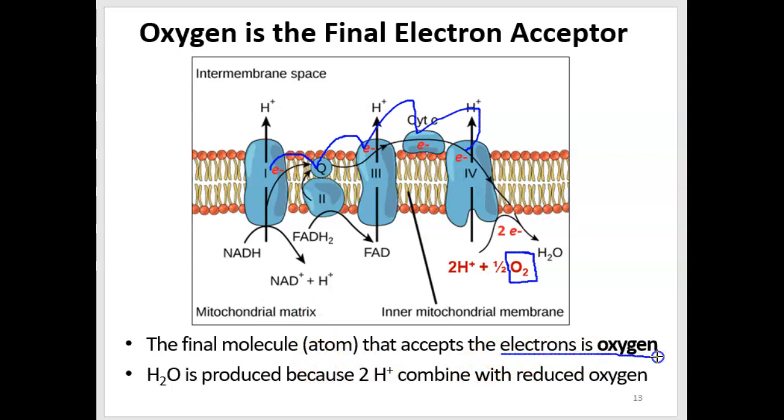Electrons go to the oxygen. We call it the final electron acceptor. And in addition, some hydrogen ions have come through ATP synthase, as well as maybe they weren't all pumped out. And so those two things combine together to produce water.